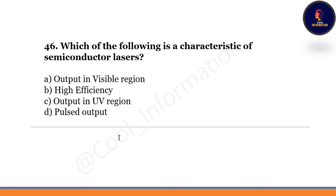Which of the following is a characteristic of semiconductor lasers? Option A: output in visible region. Option B: high efficiency. Option C: output in ultraviolet region. Option D: pulsed output. Correct option is B — high efficiency.